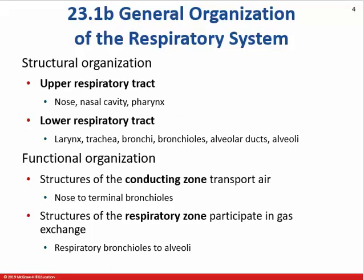The division between upper and lower tracts is basically at the pharynx — where the digestive system and respiratory system deviate, right at the larynx. The upper respiratory tract is the nose, nasal cavities, the nasopharynx, the oropharynx, the laryngopharynx, right to the larynx. The lower tract is the larynx, trachea, bronchi, bronchioles, right to the alveoli.